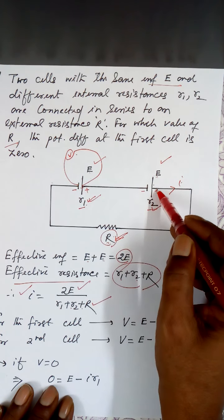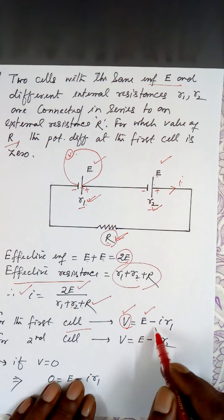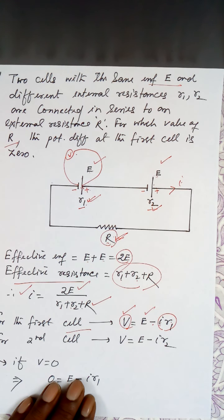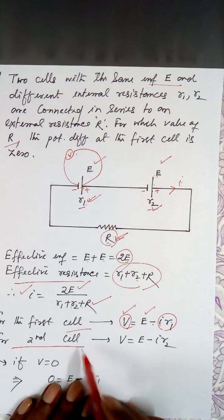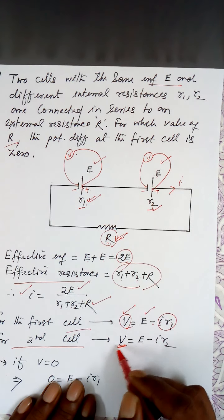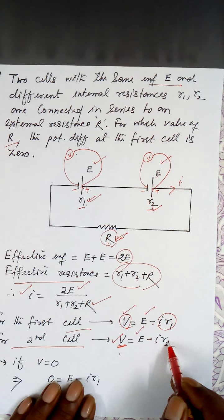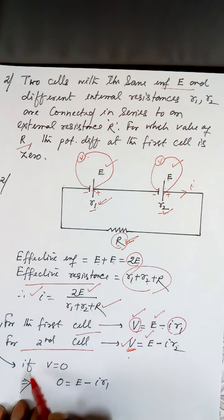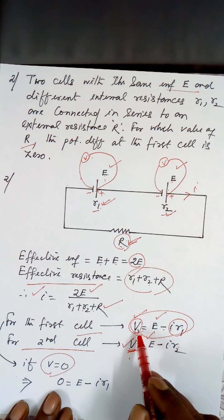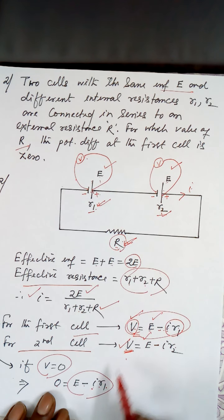For the first cell, the terminal potential difference equals EMF minus the potential drop due to its internal resistance: V equals E minus I times R1. For the second cell, similarly, the terminal voltage equals E minus I times R2. It is given in the question that for the first cell, V equals zero. So: 0 equals E minus I times R1.